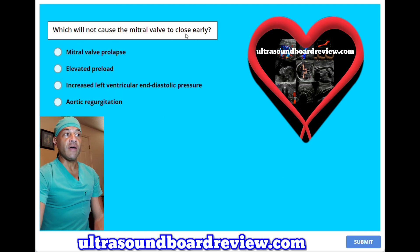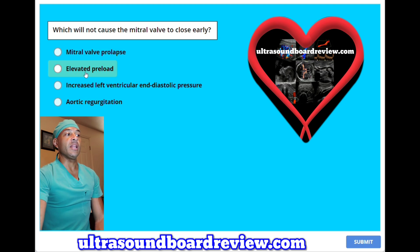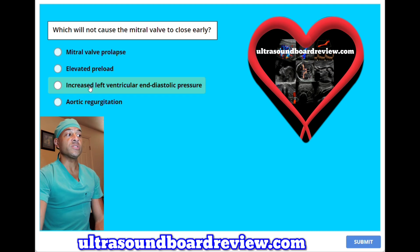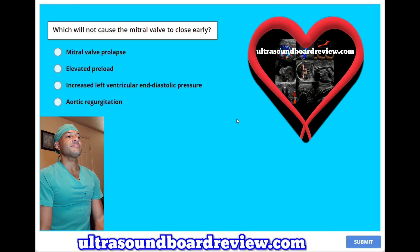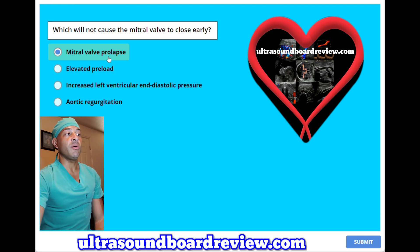Which will not cause the mitral valve to close early? A. Mitral valve prolapse. B. Elevated preload. C. Increased left ventricular end-diastolic pressure. Or D. Aortic regurgitation. The answer is A — mitral valve prolapse will not make the mitral valve close early.